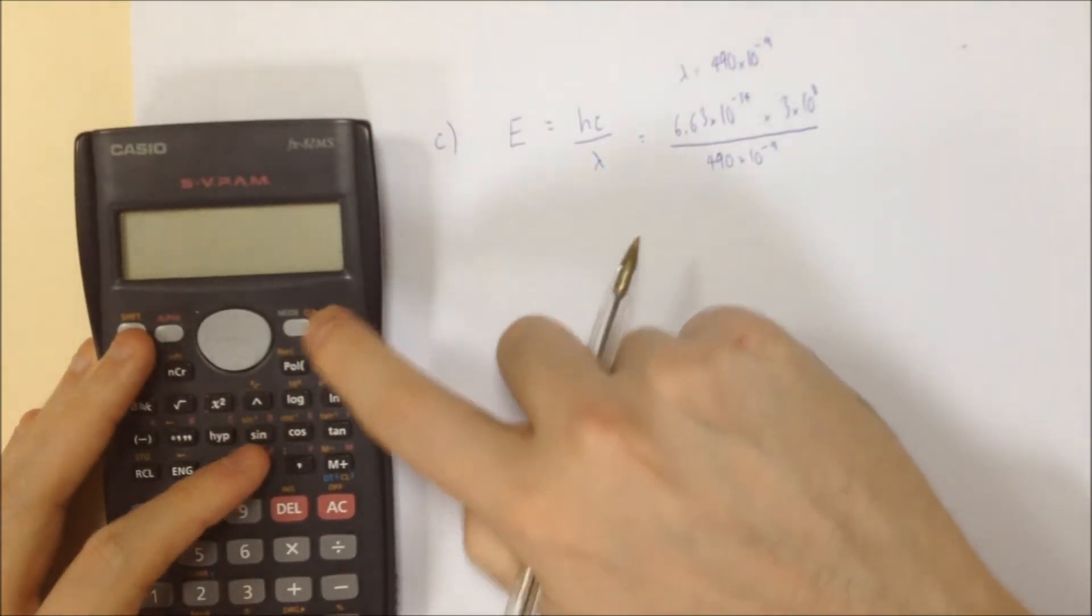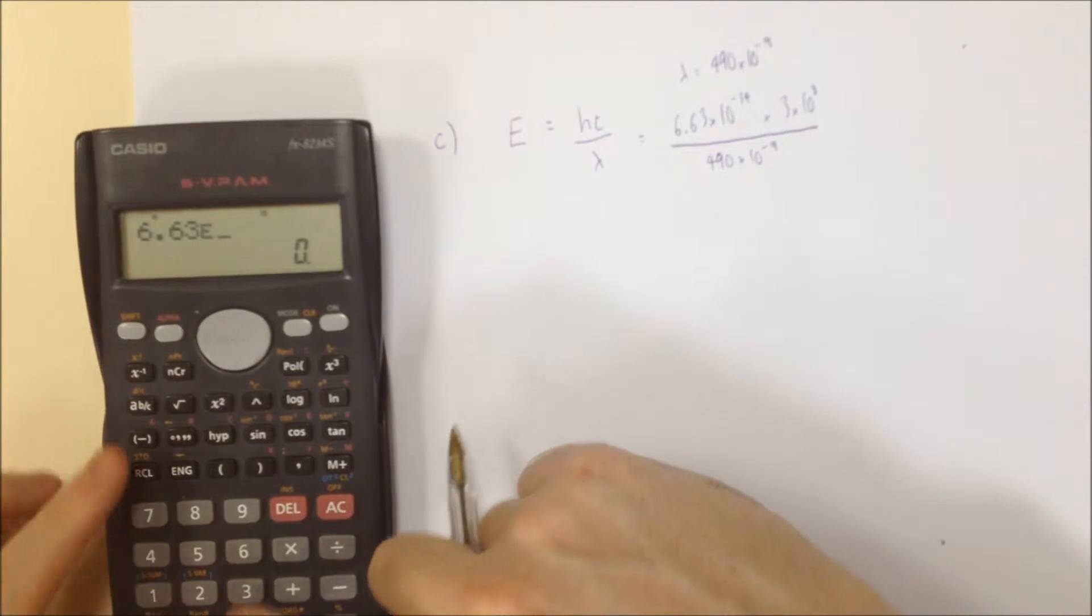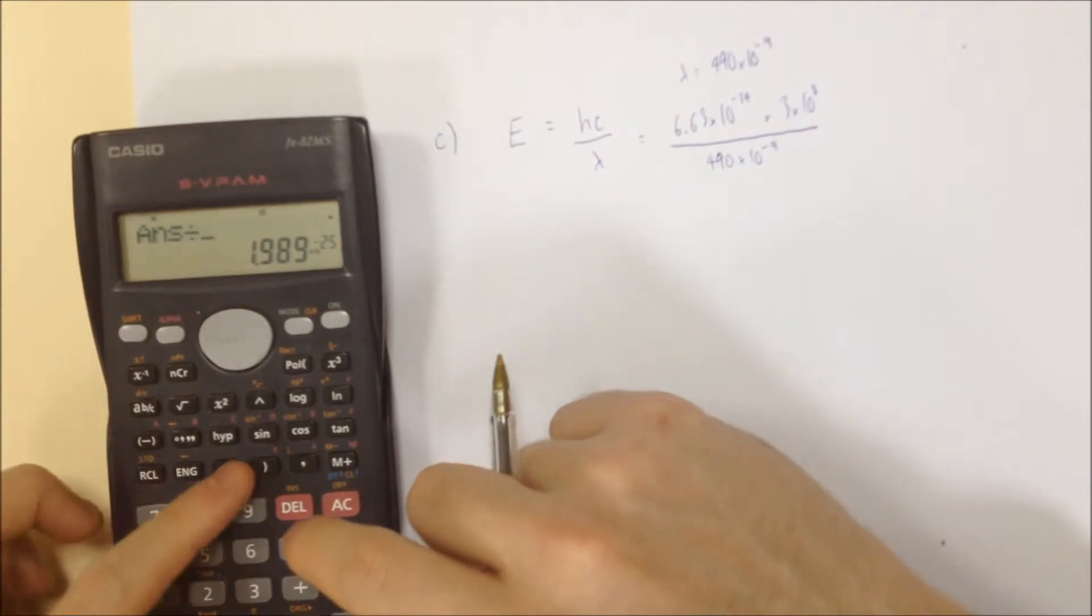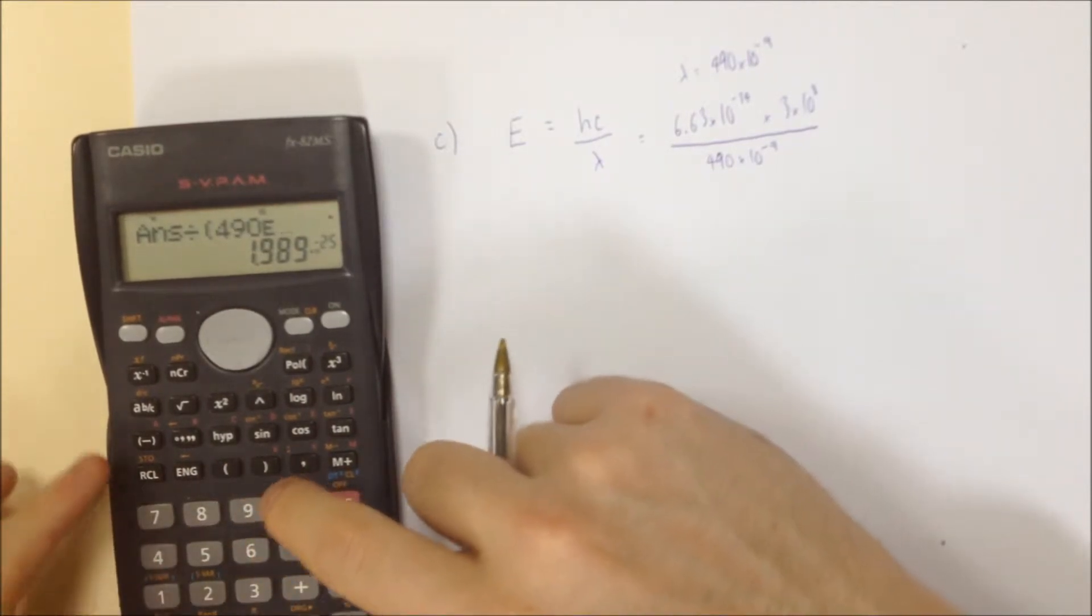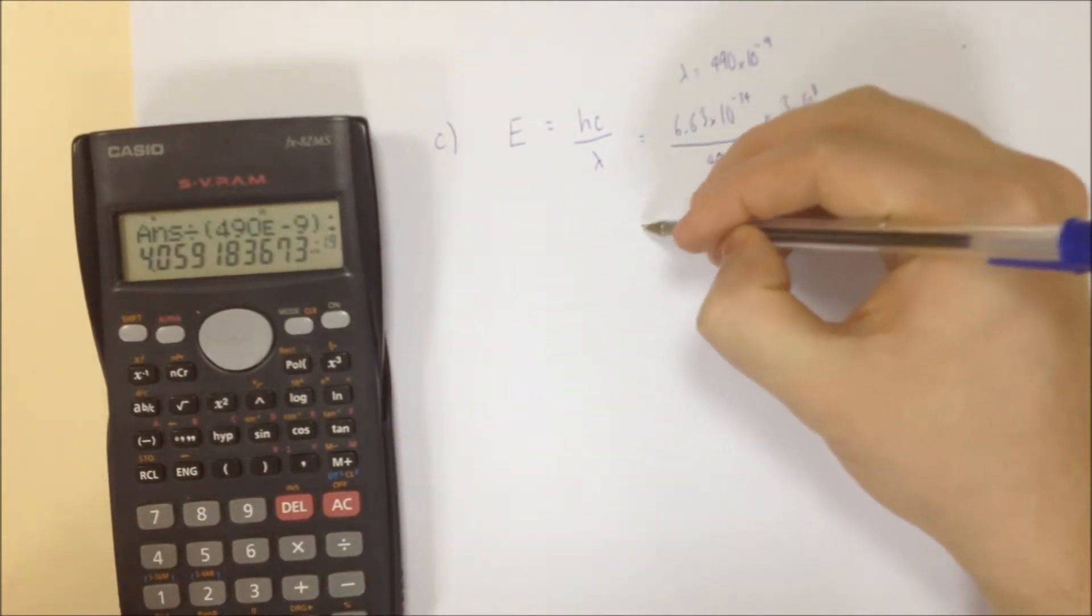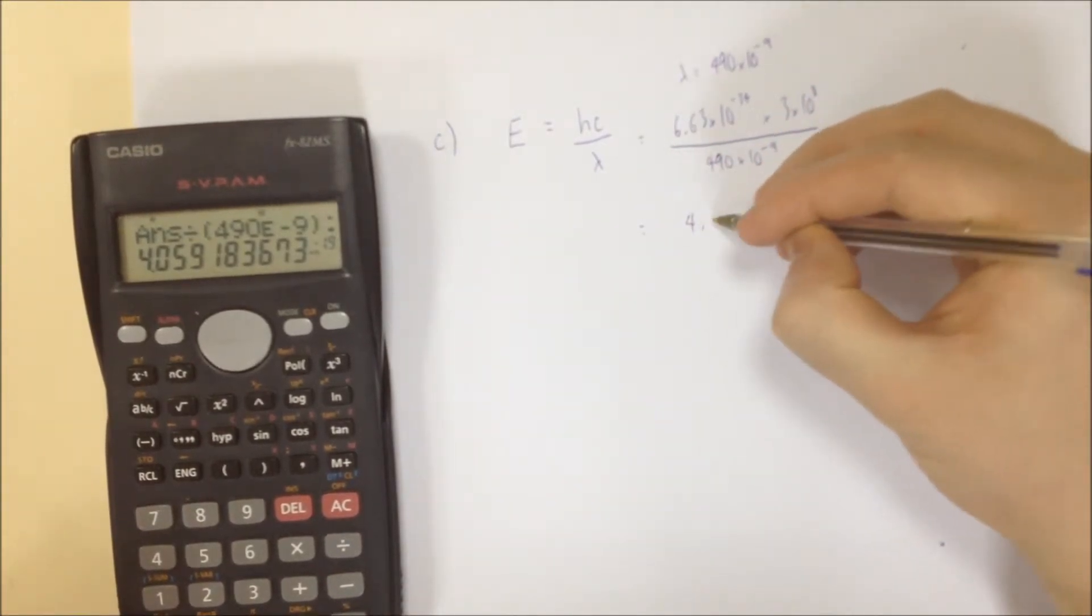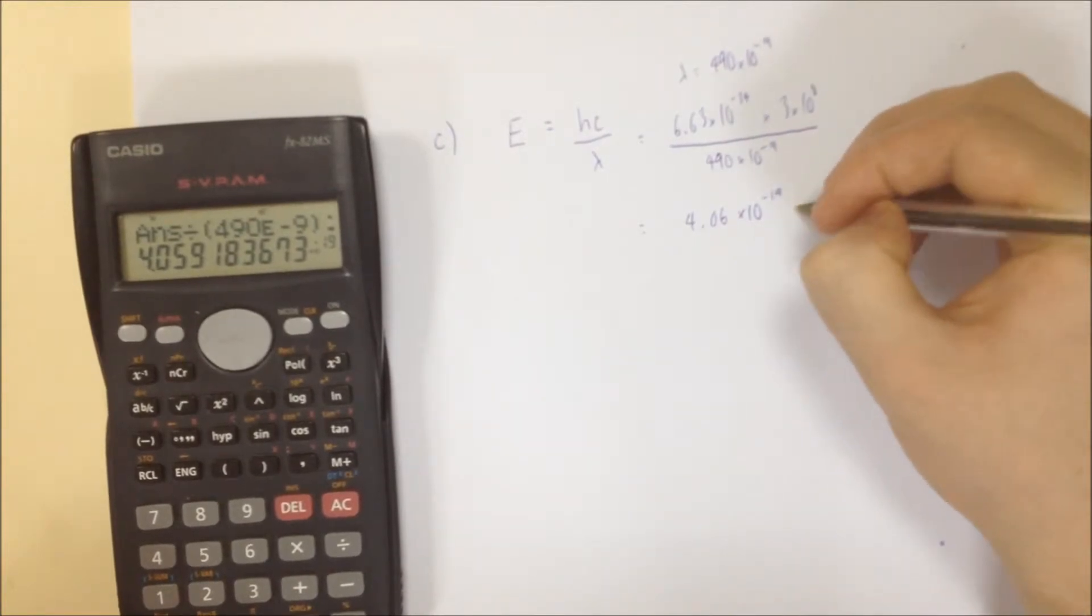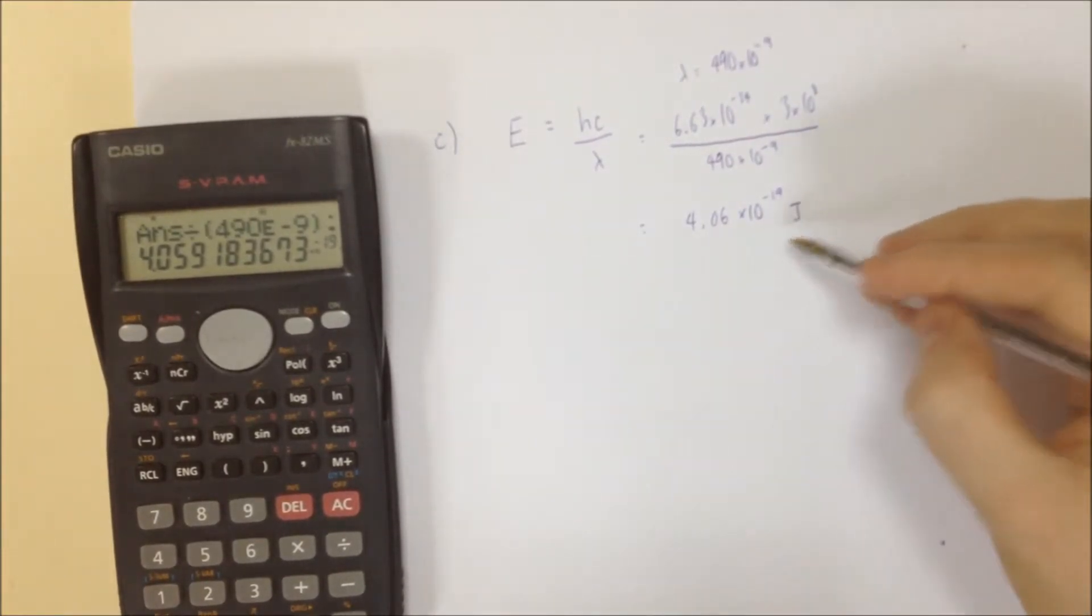Let's stick those numbers into the calculator and see what we get. We get 6.63 minus 34, multiplied by 3 to the power of 8, divided by 490 to the power of 10 to the minus 9. And that's going to give us an energy of 4.06 times 10 to the minus 19 joules. Now the reason we use electron volts is because this energy is so small,